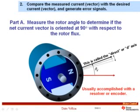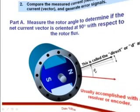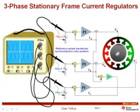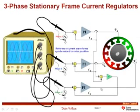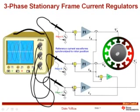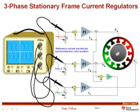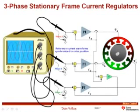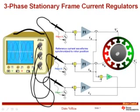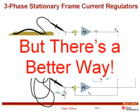Here's a pictorial of what we're accomplishing: we measure phase A and phase B currents, add them and negate to get phase C, then compare all three against desired currents. The desired currents are synchronized to the rotor angle such that they generate a net current vector at 90 degrees to the rotor flux — meaning those currents take the shape of sine waves. We'd have three current regulators operating in the stationary frame, but nobody does it this way because there's a better approach.